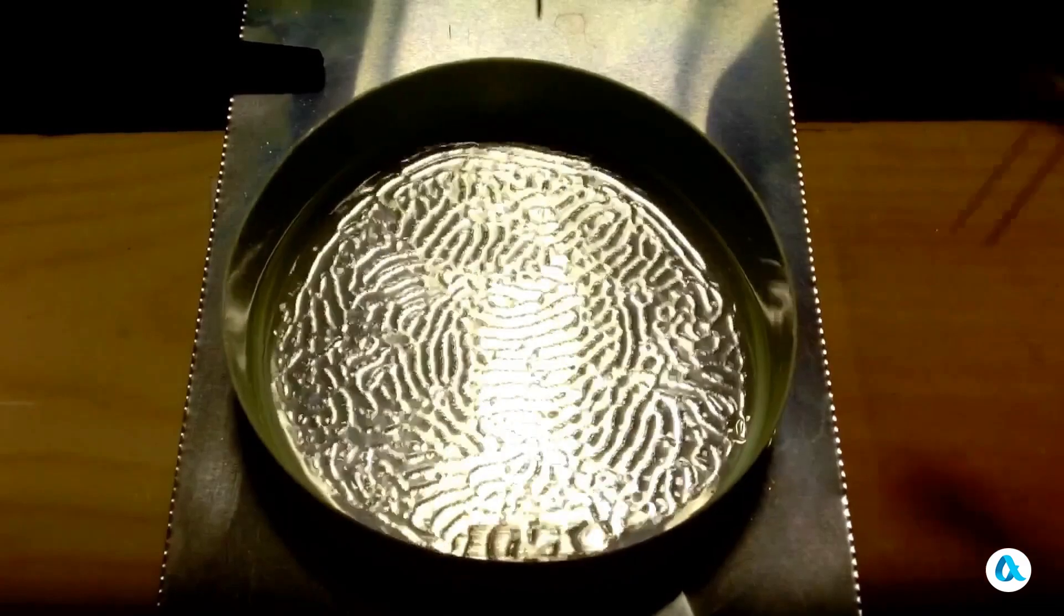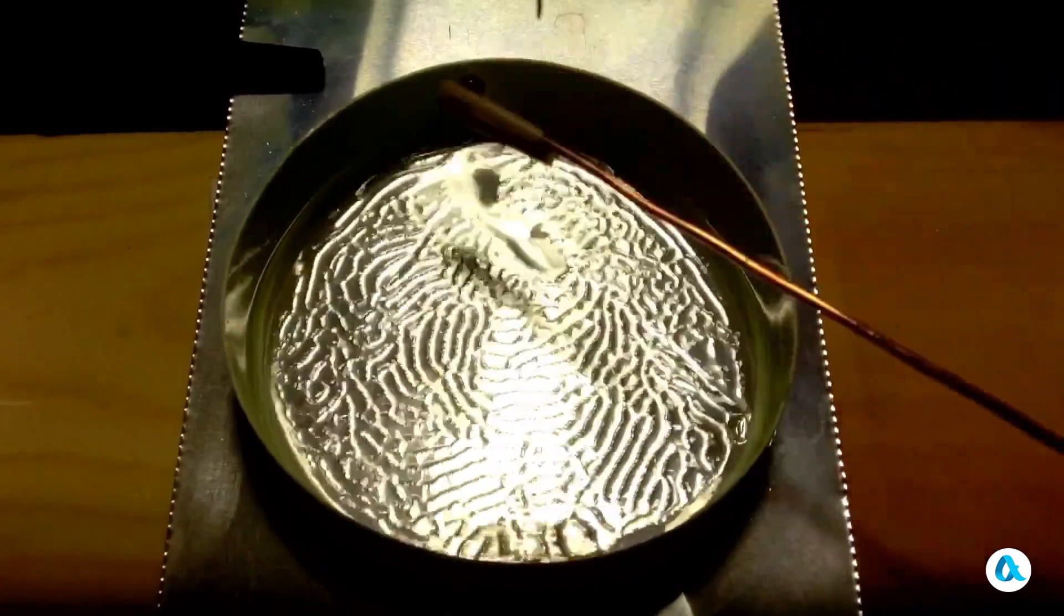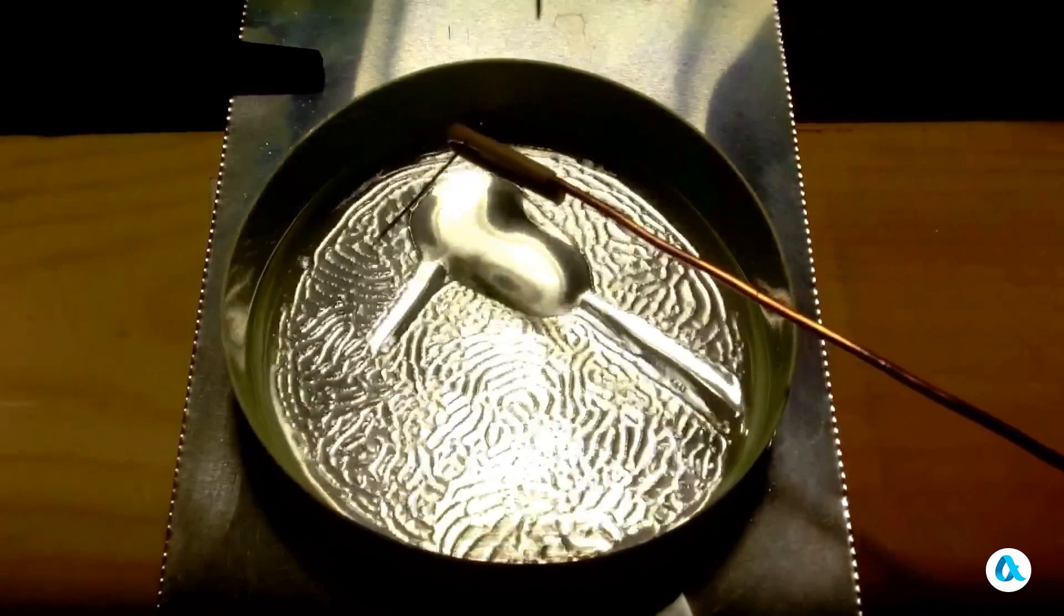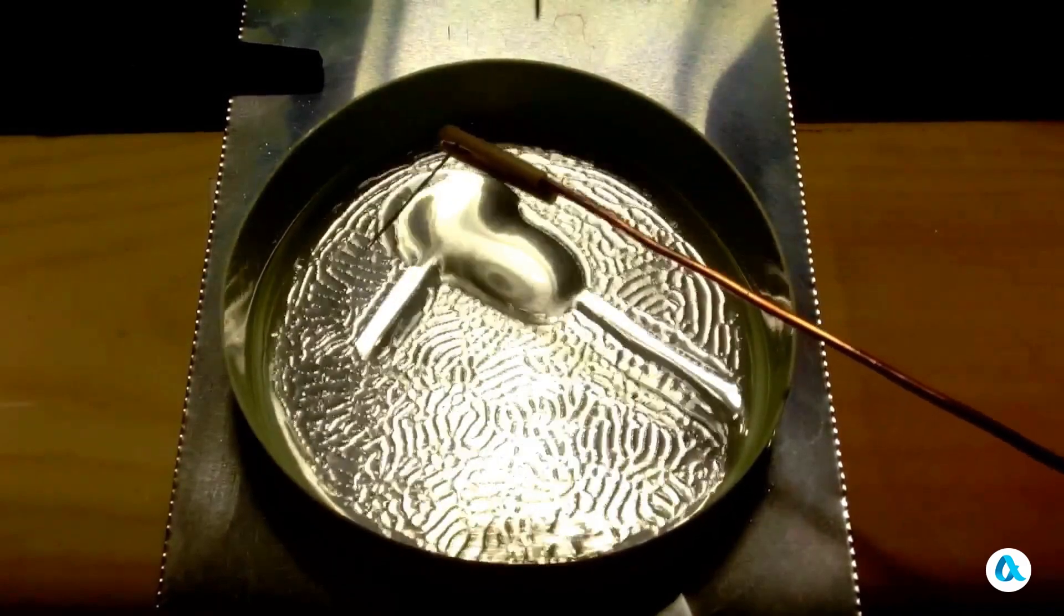Let's conduct another experiment. We'll introduce a copper wire with a needle attached to it into the discharge area. Here we see the shadow of the wire, and now the shadow of the needle has appeared.